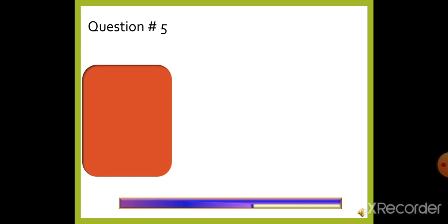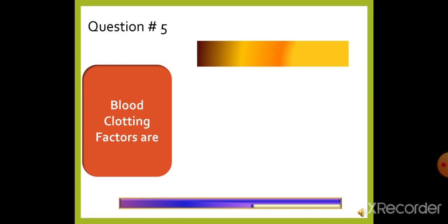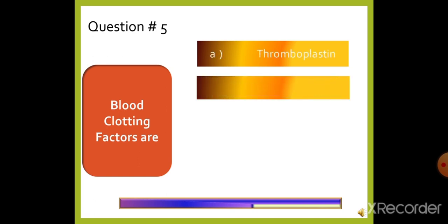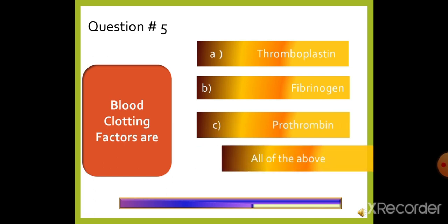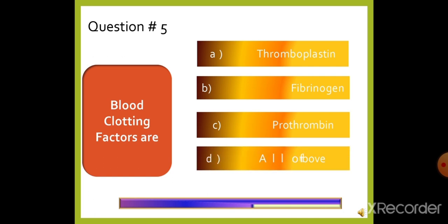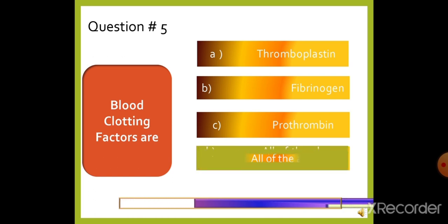Question 5: Blood clotting factors are — option A: Thromboplastin, option B: Fibrinogen, option C: Prothrombin, or option D: All of the above. The right answer is option D, all of the above — thrombin, thromboplastin, and fibrinogen.